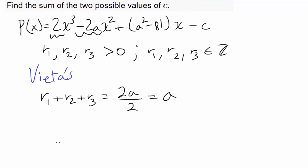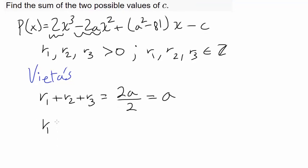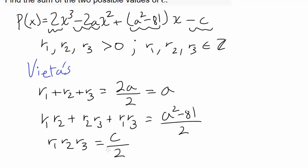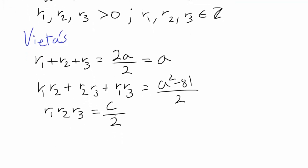What else do we know? We know r₁r₂ + r₂r₃ + r₁r₃, the second symmetric sum, is going to be the positive coefficient of x, so (a² - 81) divided by 2. We also know r₁r₂r₃ is negative of this, or c divided by the leading coefficient, so c/2.